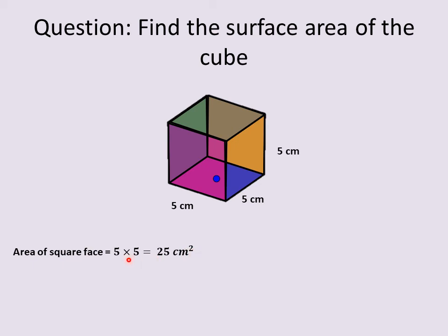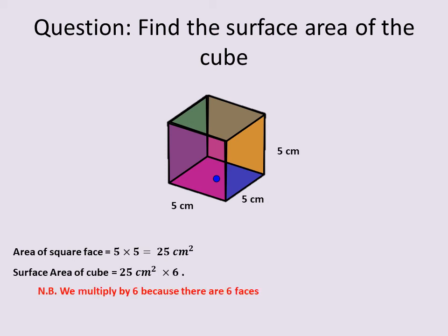After finding the area of one square face, we multiply the answer we got by six. Why? Because there are six square faces in a cube. So after finding the area of one face, we multiply by six. The total surface area of the cube is 150 centimeters squared.